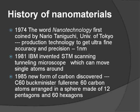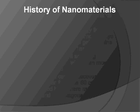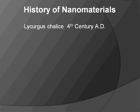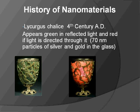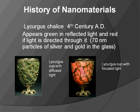In 1985, a new form of carbon was discovered: C60 Buckminsterfullerene — 60 carbon atoms arranged in a sphere made up of 12 pentagons and 20 hexagons. During the fourth century, the Lycurgus Cup was found. As you can see, two figures are given here: in one figure you can see the cup with diffuse light, and the other shows the cup when light is directly focused through it.